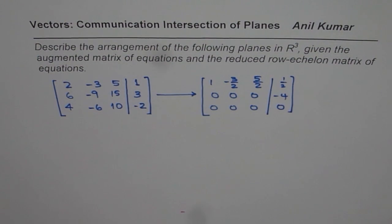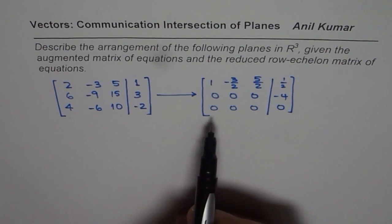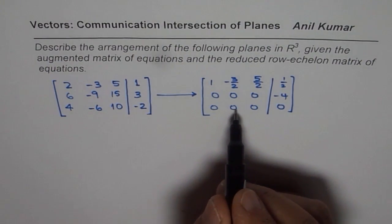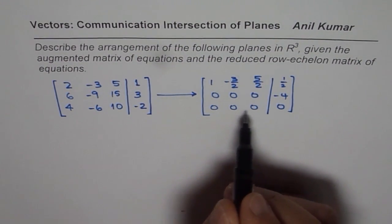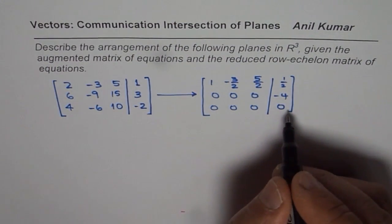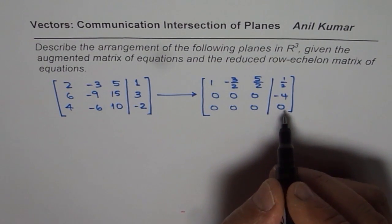Now if you analyze this particular scenario what you notice is that since this line 0 0 0 0 is there it indicates that there are two parallel planes.